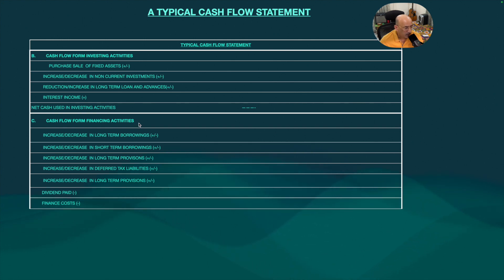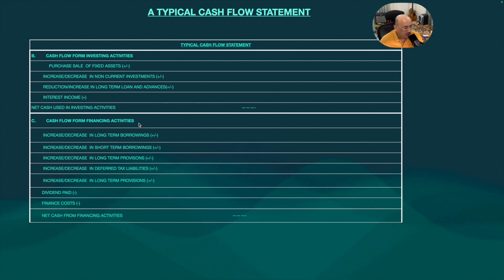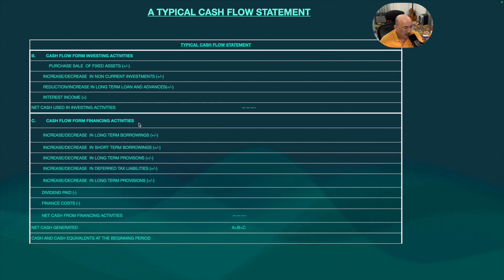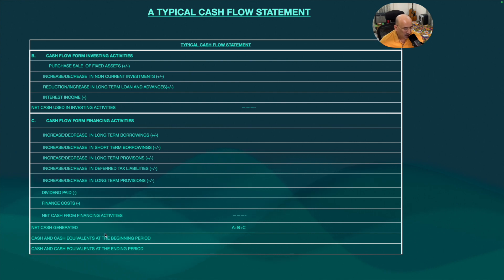Finance cost — interest and other things — you reduce because it is a cash outflow. This gives you the net cash from financing activities. The net cash generated is A plus B plus C. Cash and cash equivalents at the beginning period and at the end period should equal the net cash generated.